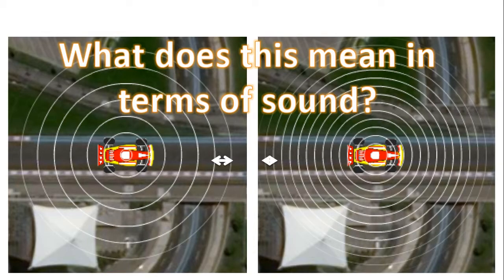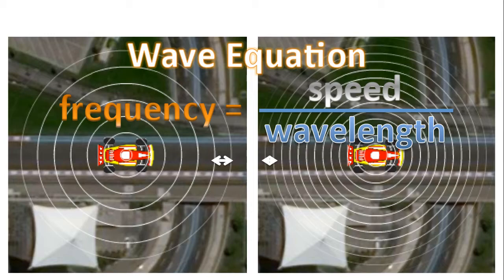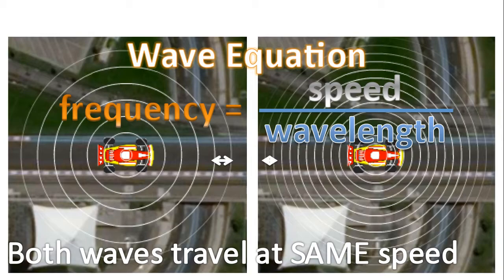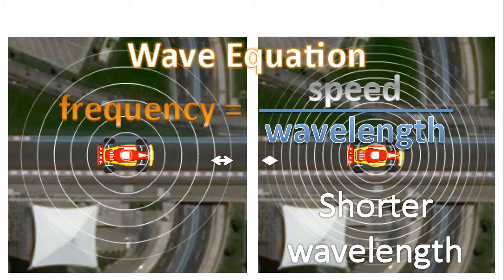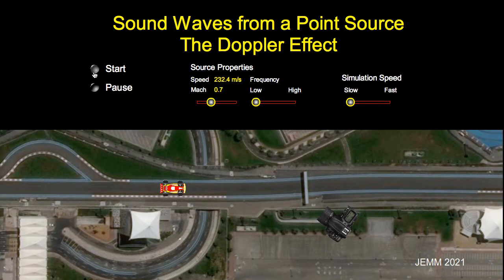So what does this mean in terms of sound? Referring to the wave equation, the frequency of a wave is equal to the speed at which that wave propagates divided by the wavelength. Since in both situations the medium has not changed, the speed of the wave is the same for each situation. However, notice we have a shorter wavelength. Therefore, for the second situation, we have a higher frequency of sound, which means a higher pitch. So now let's put this all together for a moving car and see how the Doppler effect works in terms of the waves the engine creates.